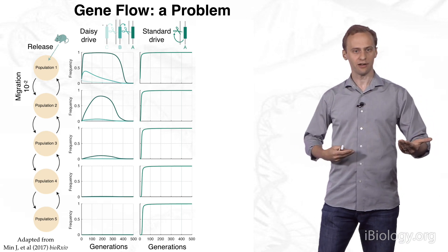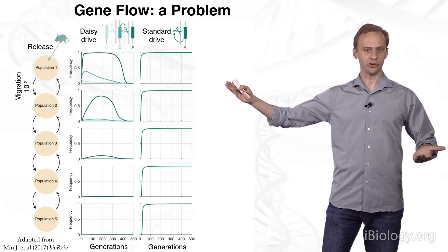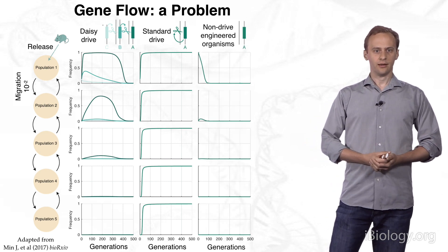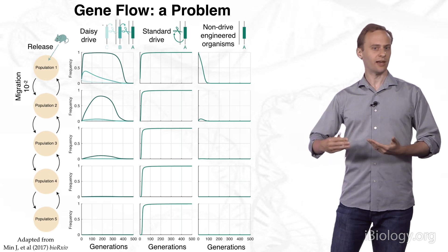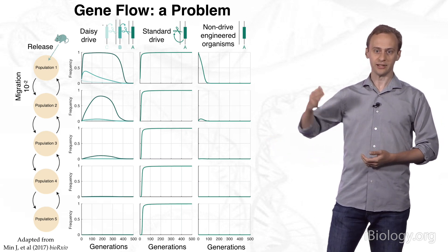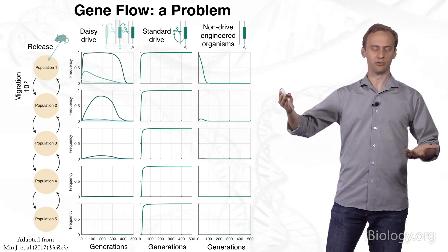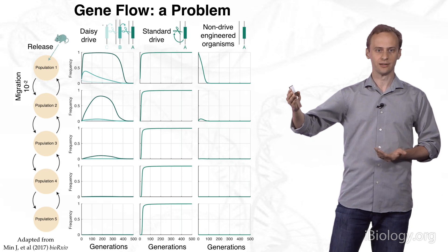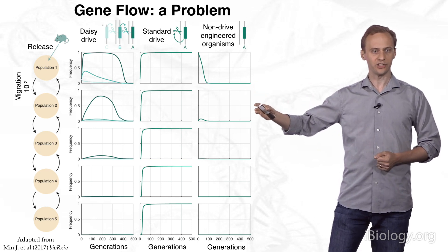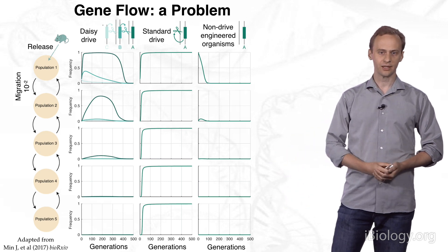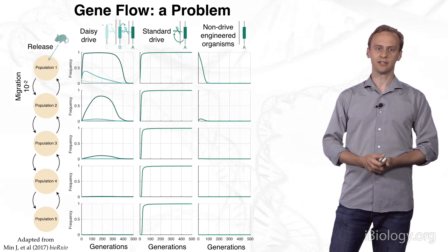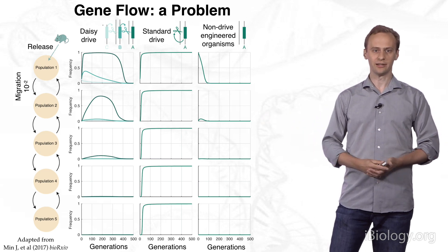We can contrast that with a standard gene drive that is self-propagating. Once released in population one, it spreads to virtually all organisms, and of course it spreads into all of the other populations, one through five. The other useful comparator is what happens if we simply release a lot of engineered organisms with no drive system at all, that are just engineered to have the relevant trait. If we release enough of them, what's called an inundated release, such that the frequency is nearly all of them, then we still see a little bit of change in population two, but virtually none in three and four and five.